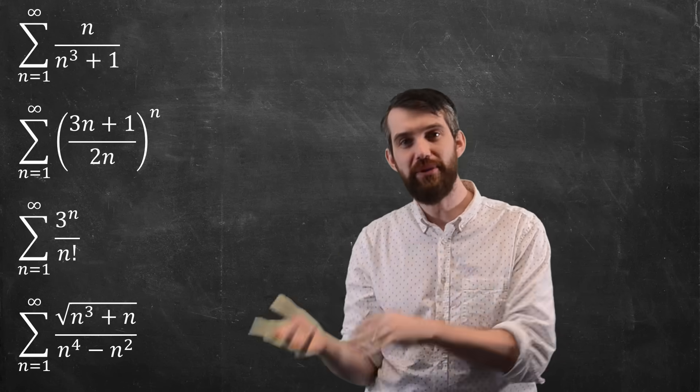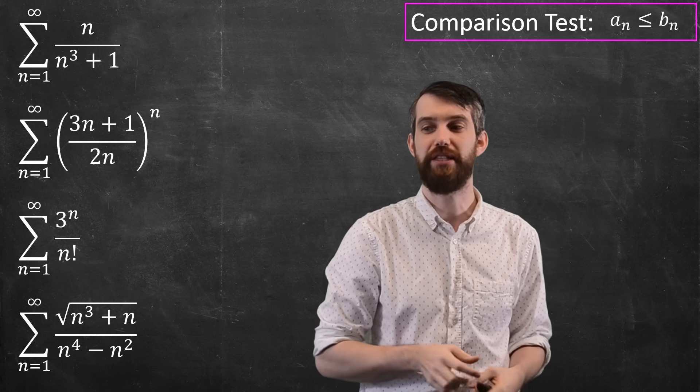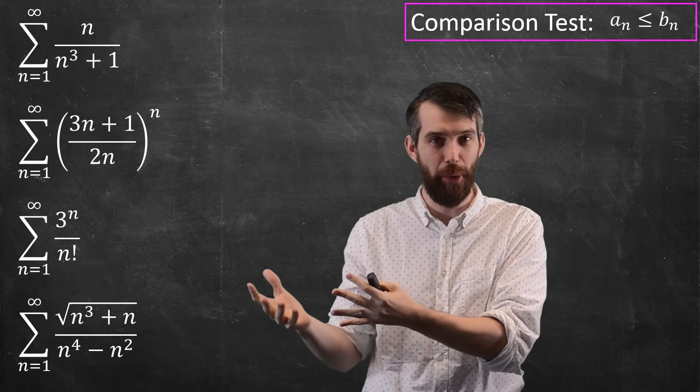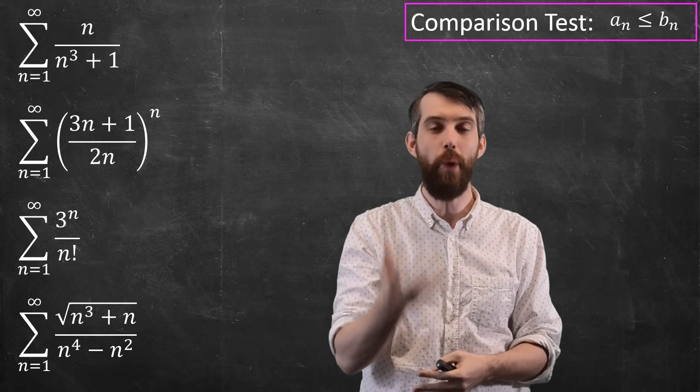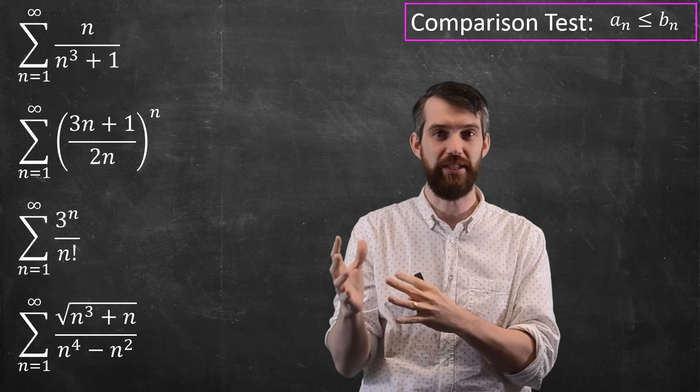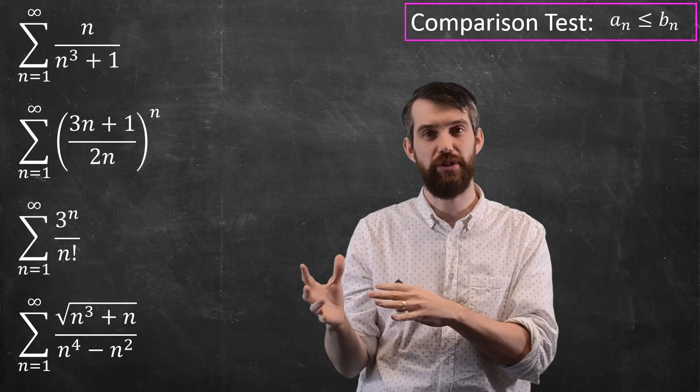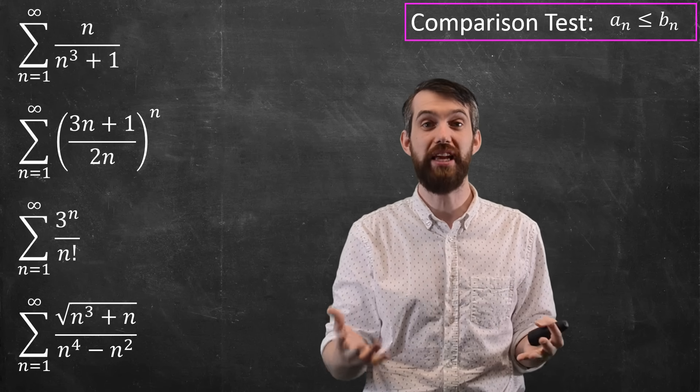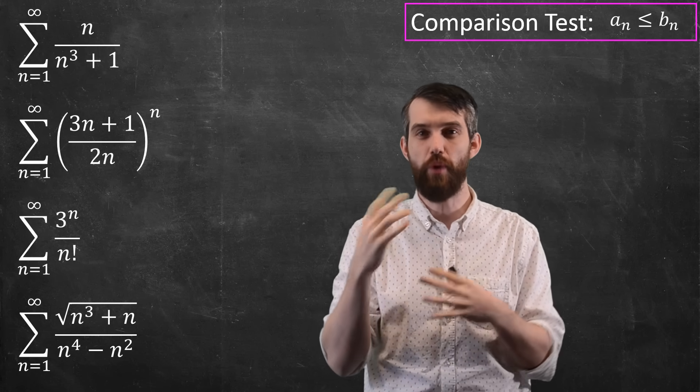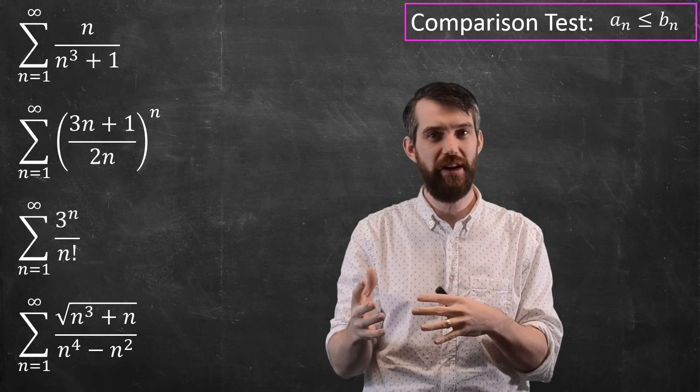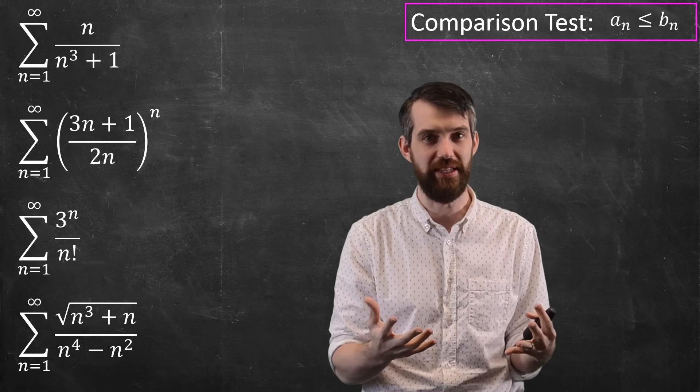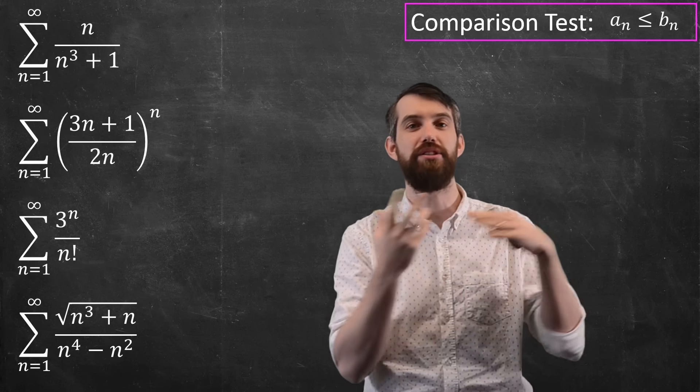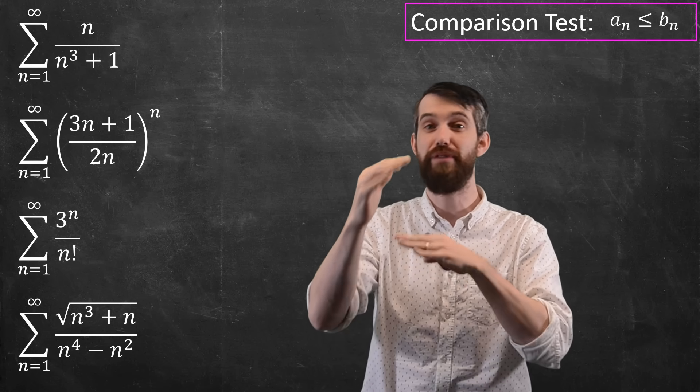The next one I want to talk about is comparison test and limit comparison test. We'll do a comparison test first. Now, the whole point about the comparison test is that you have to have it compared to something you can do. And there's really only two things that we know how to do very well. There's geometric series and there's p-series. We know when geometric series converge and we know when p-series converge. Now, both the top and the bottom in this scenario have something that looks like a quotient of polynomials or with square roots. But in the limit as n goes to infinity, the top and bottom look a lot like p-series. They look like some power of n. So these are the types of ones I want to apply comparison test to or the limit comparison test to, particularly if you've got these nice fractions.